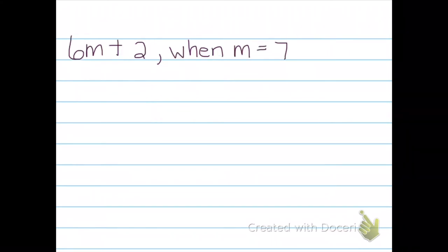Now, the first problem that we're going to solve today is 6m plus 2. We're going to solve it when m is equal to 7. We must remember what this means right here. When you have a number next to a variable, here's your number, here's your variable, it means to multiply. So 6 times m would be 6 times 7, and as we know, m is equal to 7.